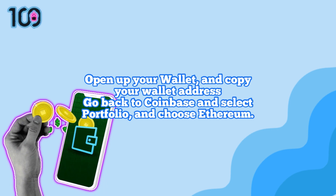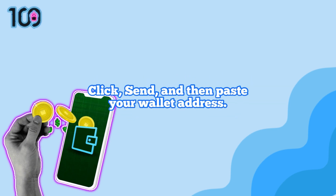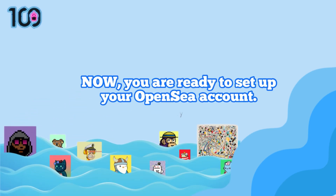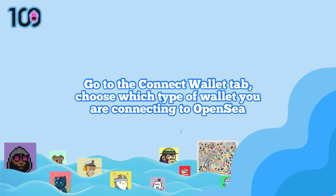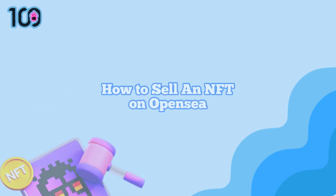Open up your wallet and copy your wallet address. Go back to Coinbase, select portfolio, and choose Ethereum. Click send and then paste your wallet address, then click continue to send your ETH. Now you are ready to set up your OpenSea account — go to the connect wallet tab and choose which type of wallet you are connecting. Once your wallet is connected to OpenSea, you can go to your profile and update your information in settings.